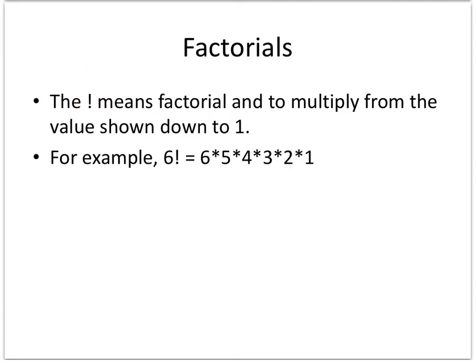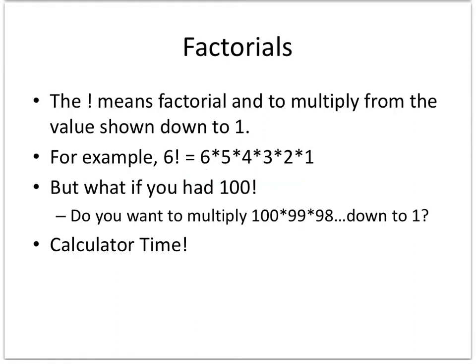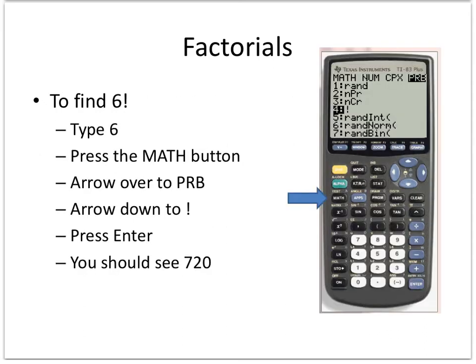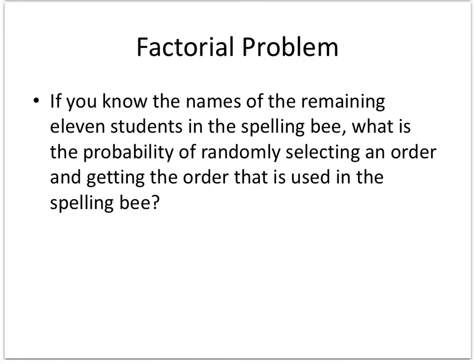Factorial means to multiply from the value shown down to one. For example, six factorial means start at six and multiply all the way down to one. For something like one hundred factorial, you certainly want to use your calculator. To find six factorial on a calculator, type in six, press the Math button, arrow over to PRB for probability, arrow down to the factorial symbol, press Enter, and you'll get the answer of 720.